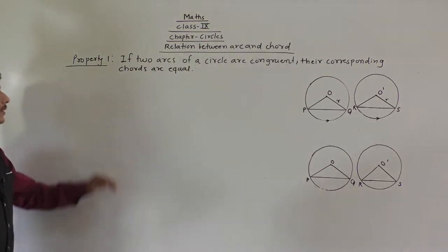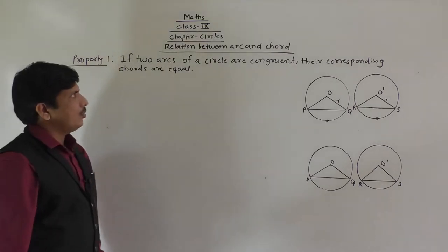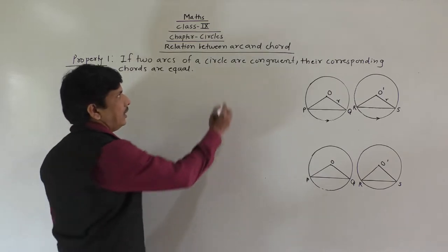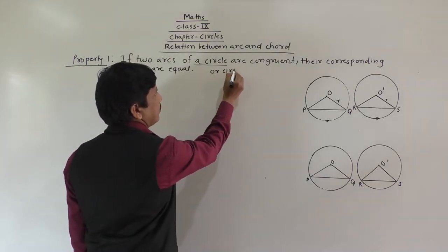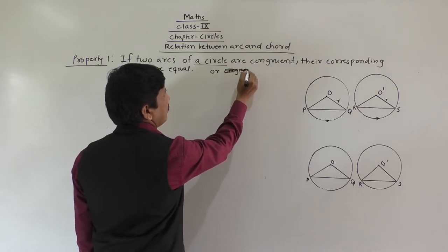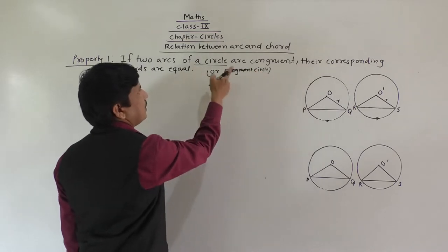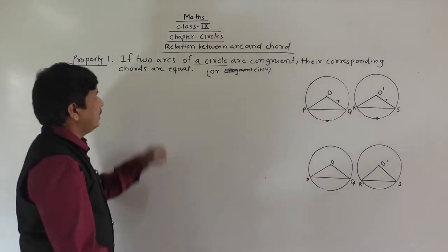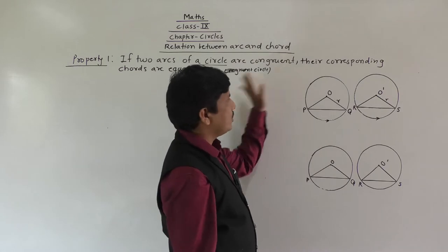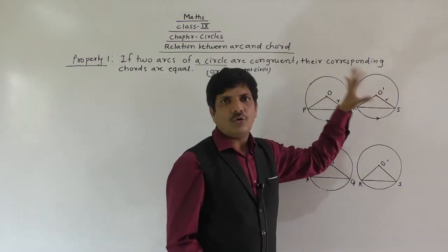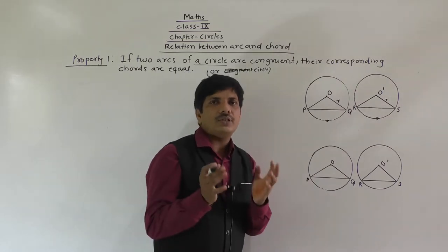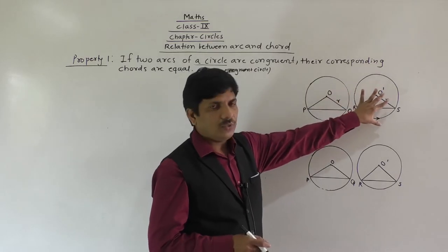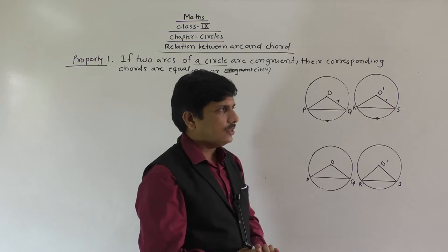Property number one: if two arcs of a circle, or of congruent circles, are congruent, their corresponding chords are equal. Congruent circles means the radii of both circles are equal. For example, if the radius of this circle is 5 cm and the radius of the other circle is also 5 cm, then both circles are congruent. Here, the radius of circle with center O is R, and the radius of circle with center O dash is also R, so both circles are congruent.